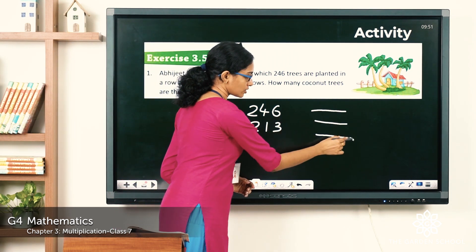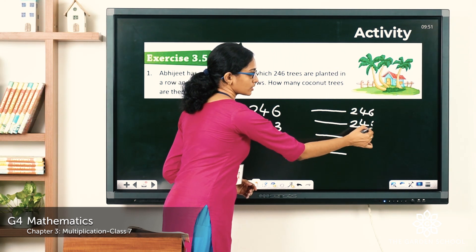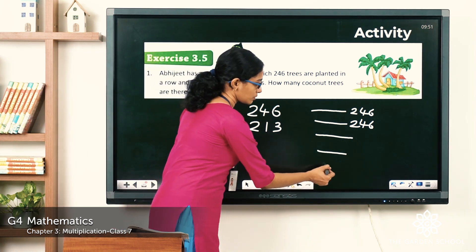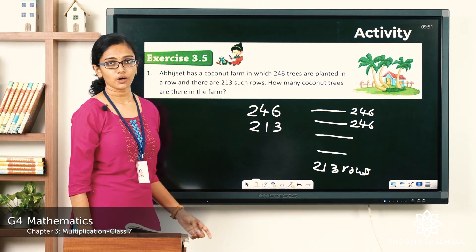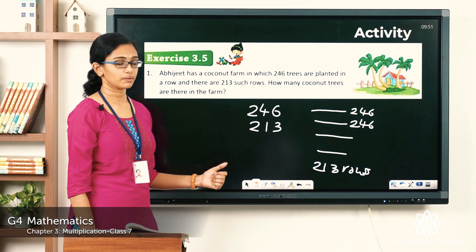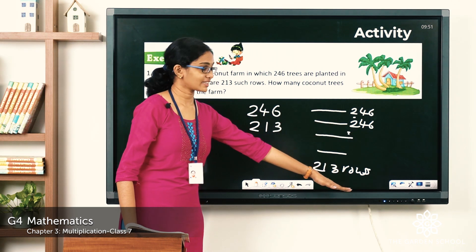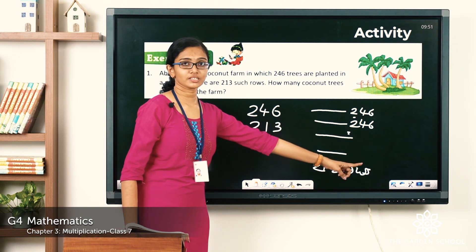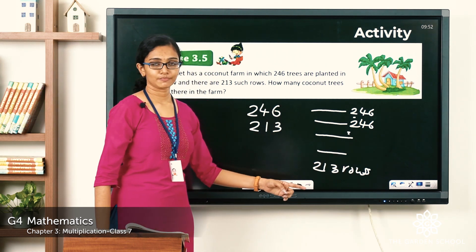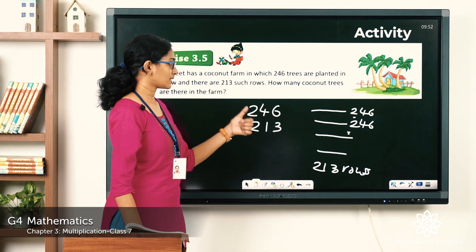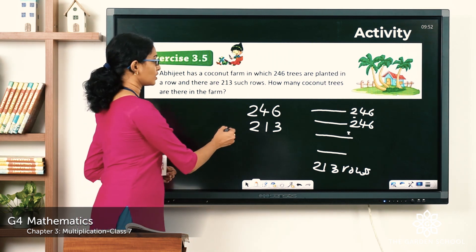So you have the first row, second row, third row, and in each row you have 246 coconut trees. Like that, how many rows? There will be 213 rows. To find the total number of coconut trees, you have the first row: 246 + 246 + 246, and like that, how many times do you add 246? You add 246 exactly 213 times — the number of rows. You are adding repeatedly, which means you are multiplying.